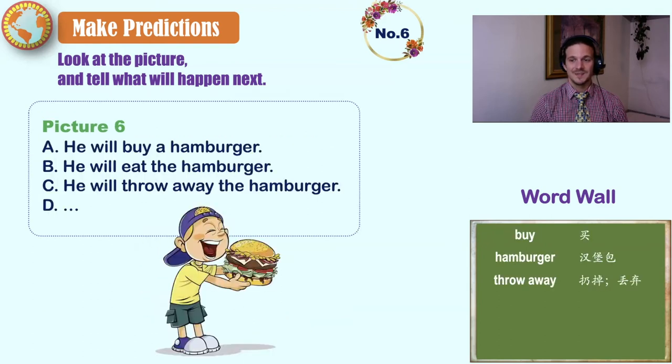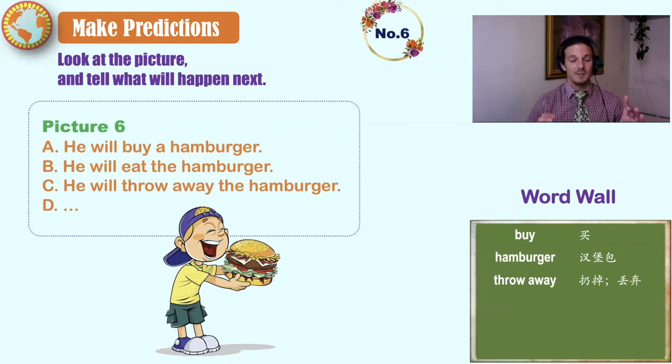Six, buy hamburger, throw away. He will buy a hamburger. He will eat the hamburger. He will throw away the hamburger. How about D? Your turn. The boy is holding a full hamburger. His mouth is open. His eyes are closed. He will eat the hamburger.